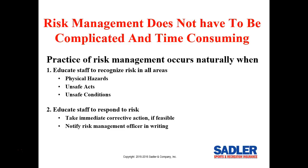Another example: if a lightning storm is approaching during a baseball game and the 30-30 lightning rule is being ignored by the coaches and umpire, a responsible coach should speak up and insist upon immediate postponement, and inform the risk management officer to review and reinforce the rule again with staff.